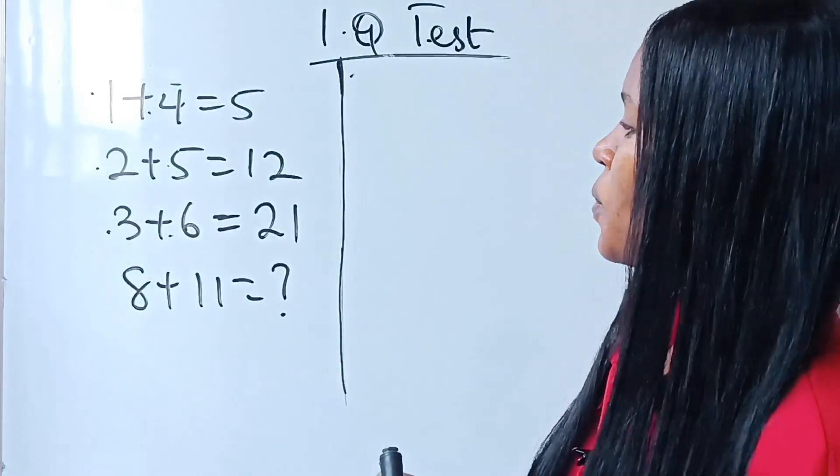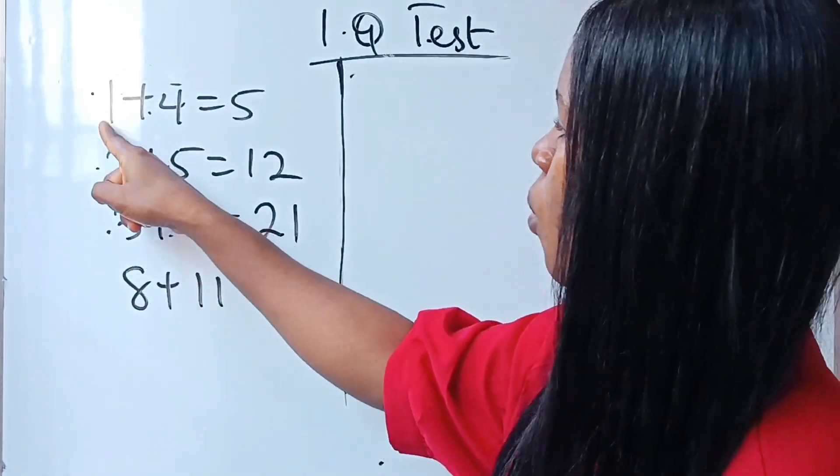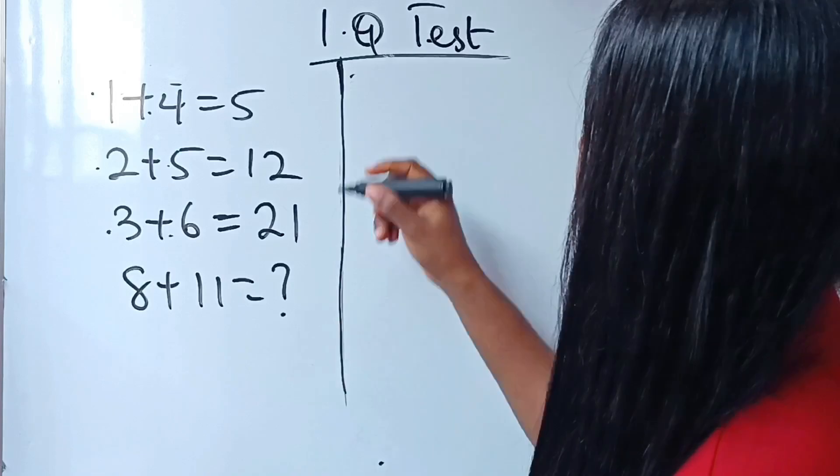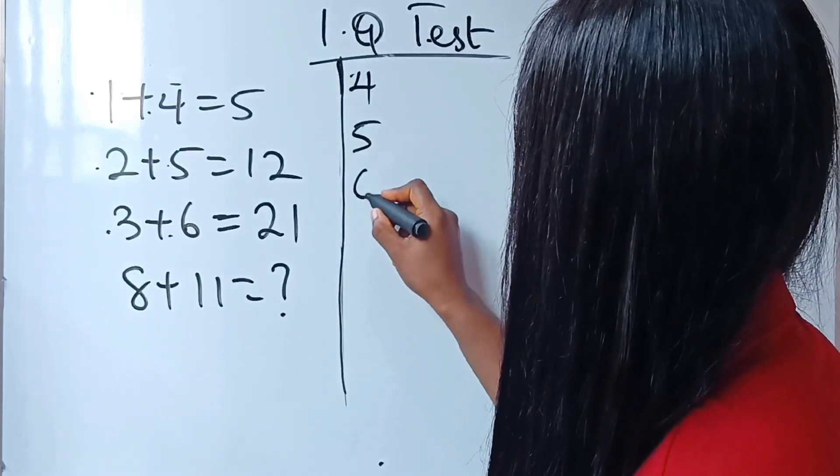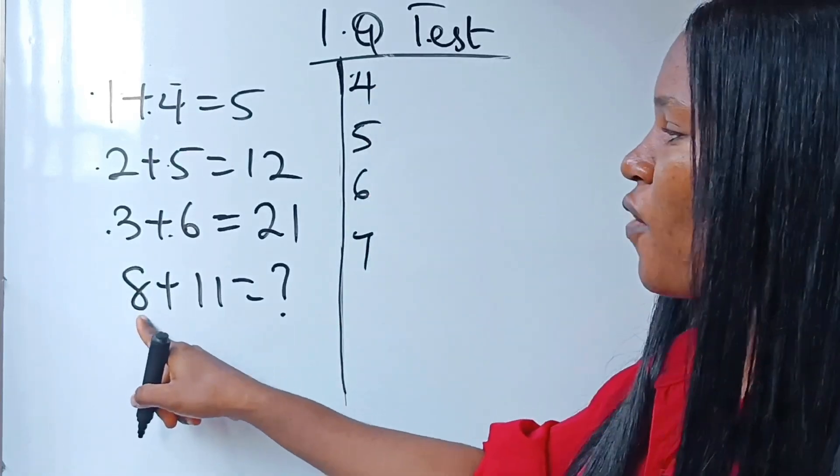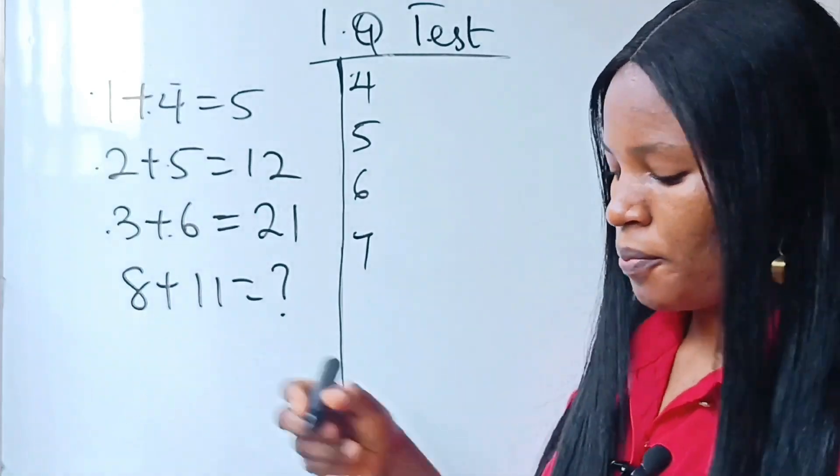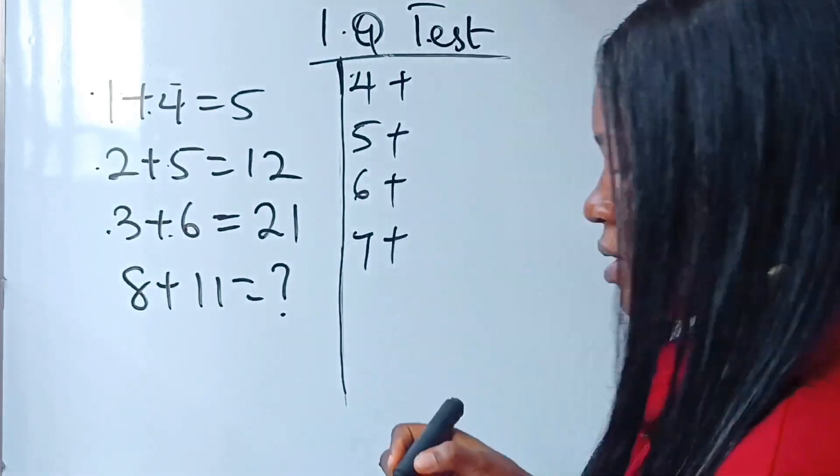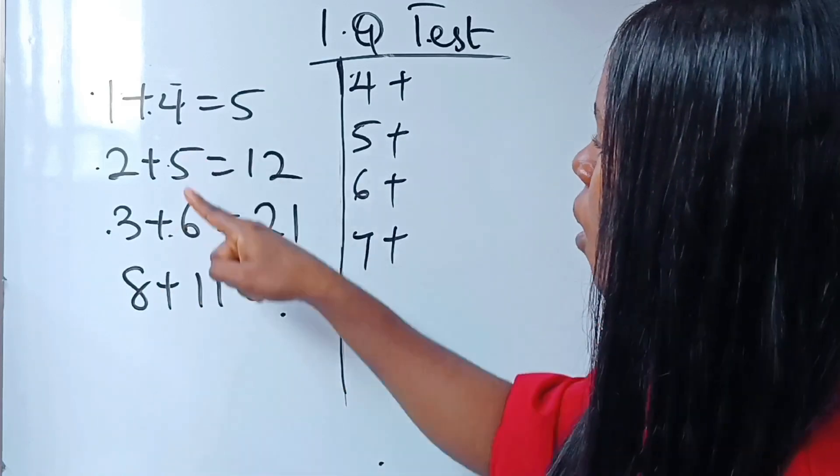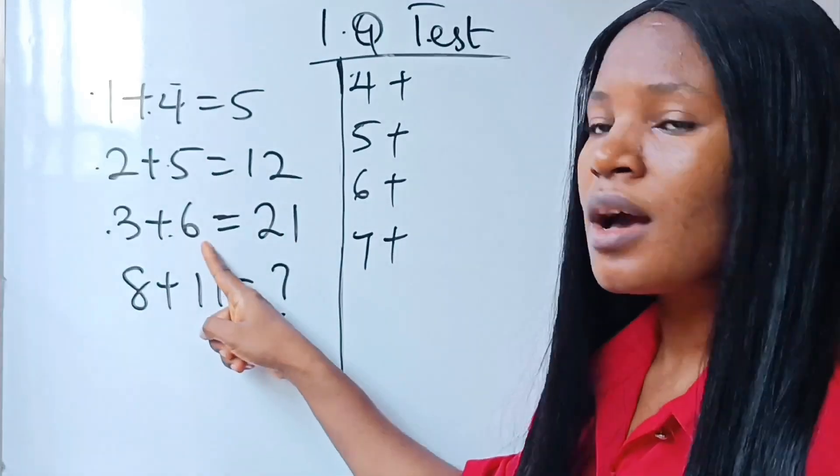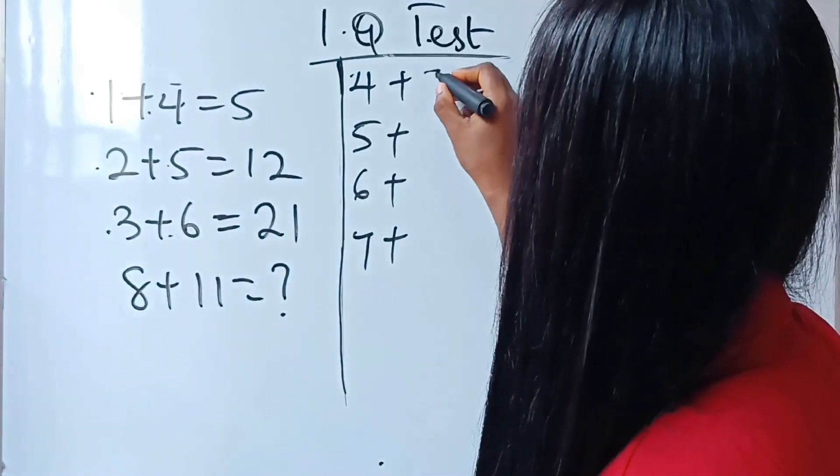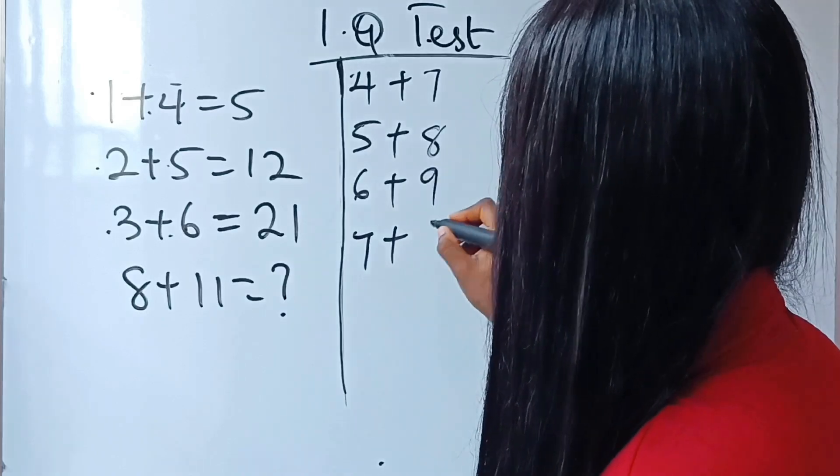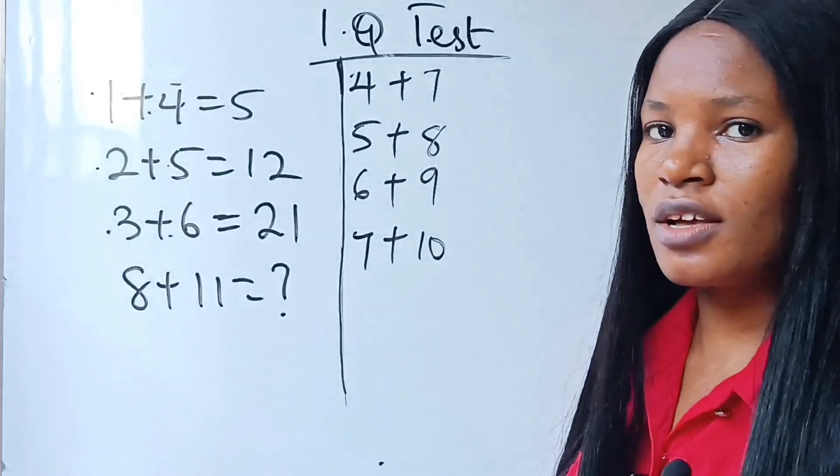And what are those equations? Since we have 1, 2, 3, that means we need 4, 5, 6, 7 before we get to 8, right? Then plus, plus, plus, plus, plus. We have 4, 5, 6. That means we missed 7, 8, 9, 10. Do you understand?